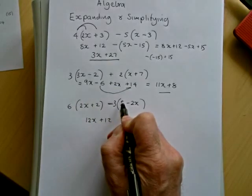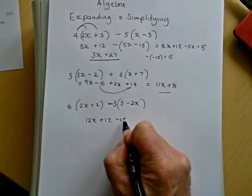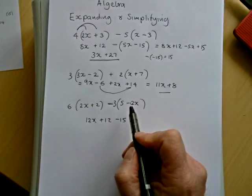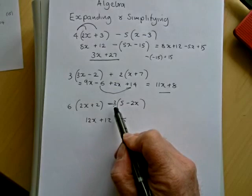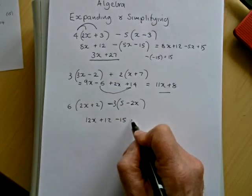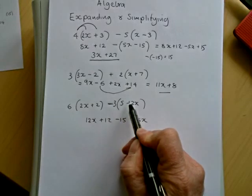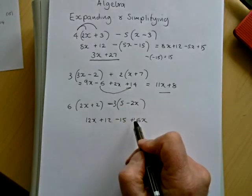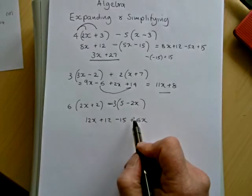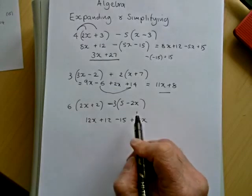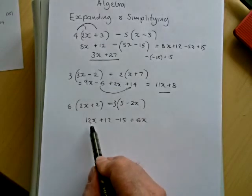Minus 3 times 5 is minus 15. And then minus 3 times minus 2x is plus 6x. Again, remember the minus times the minus gives us a plus. The most common mistake is for students to leave that as a minus.